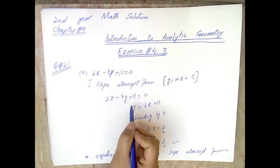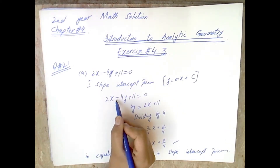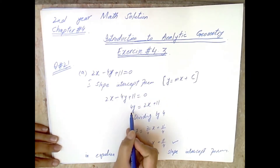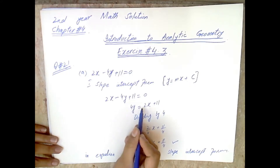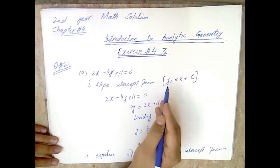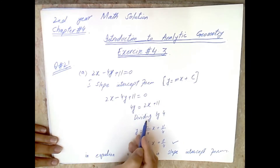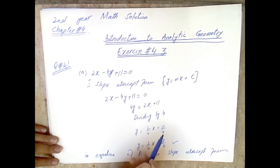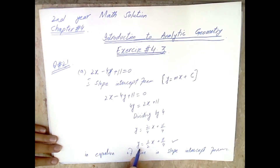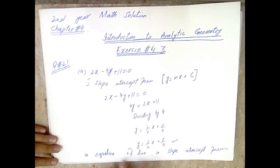To make the slope-intercept form, we isolate y. Moving terms: y has no standalone coefficient, so we divide both sides by 4. This gives y = (2/4)x + 11/4. After simplification, the equation becomes y = (1/2)x + 11/4. This is the equation of the line in slope-intercept form.